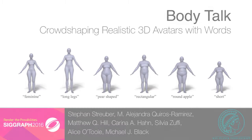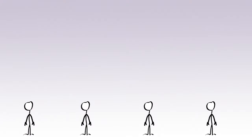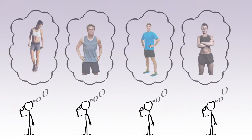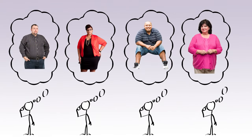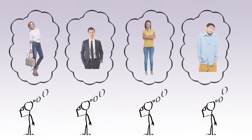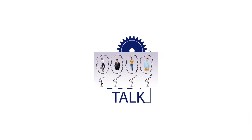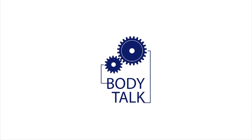Humans have a shared understanding of body shape. For example, we all have an idea of what a fit body looks like, or a round apple body, or a skinny body. We use this knowledge of the crowd to create BodyTalk.